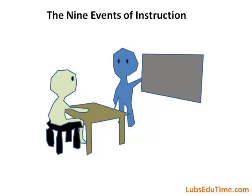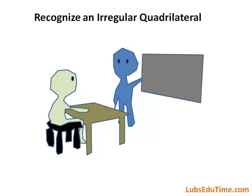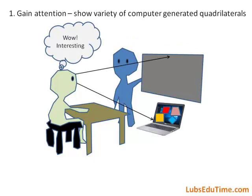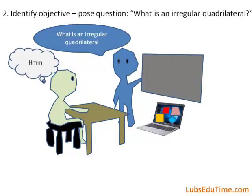The nine instructional events per the objective: recognize an irregular quadrilateral. Event 1: Gain attention. Show a variety of computer-generated quadrilaterals.